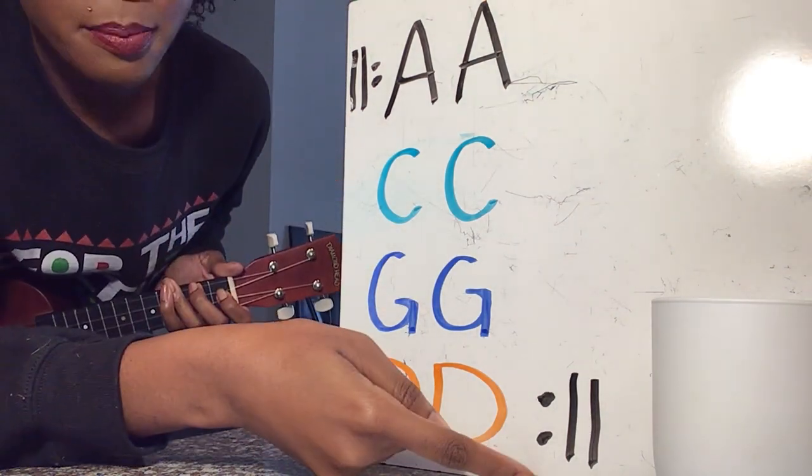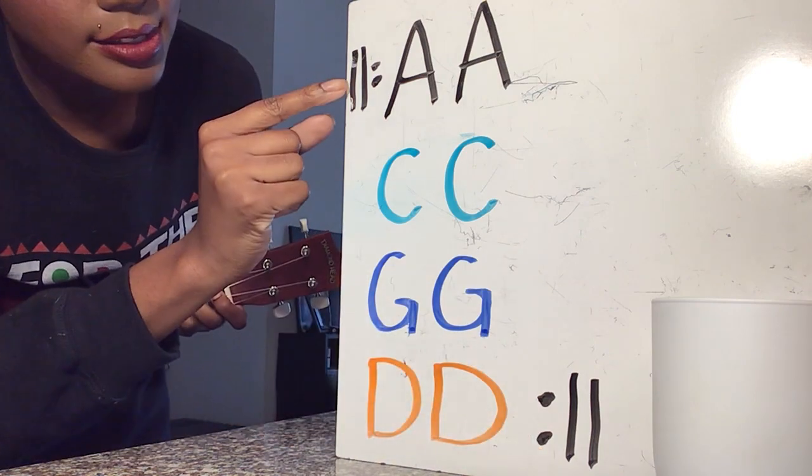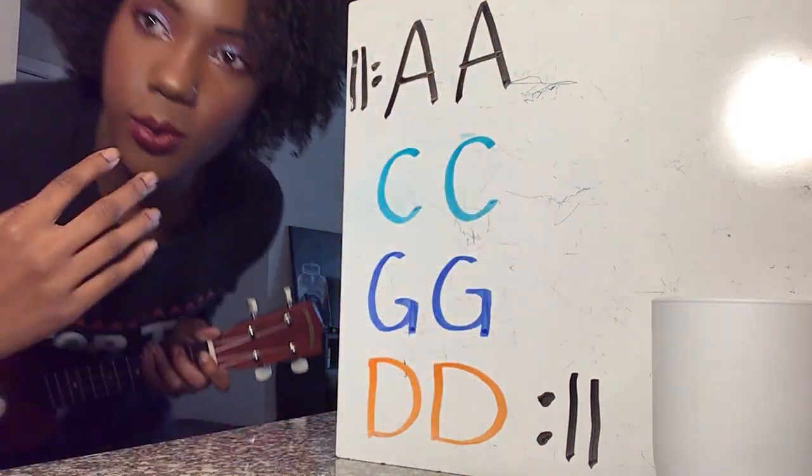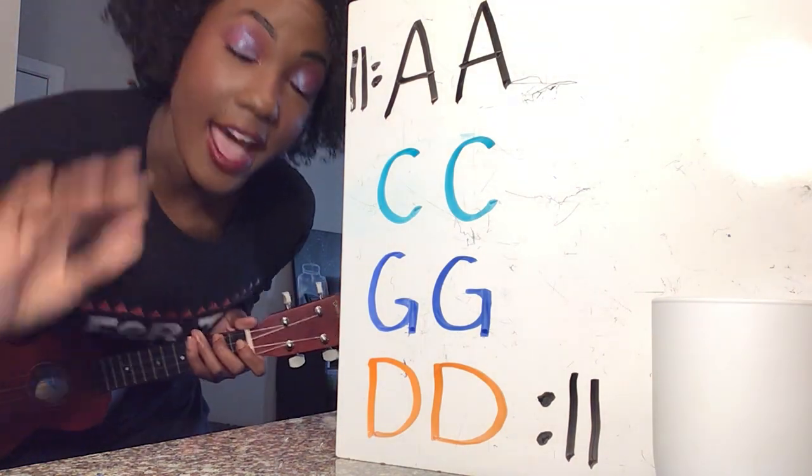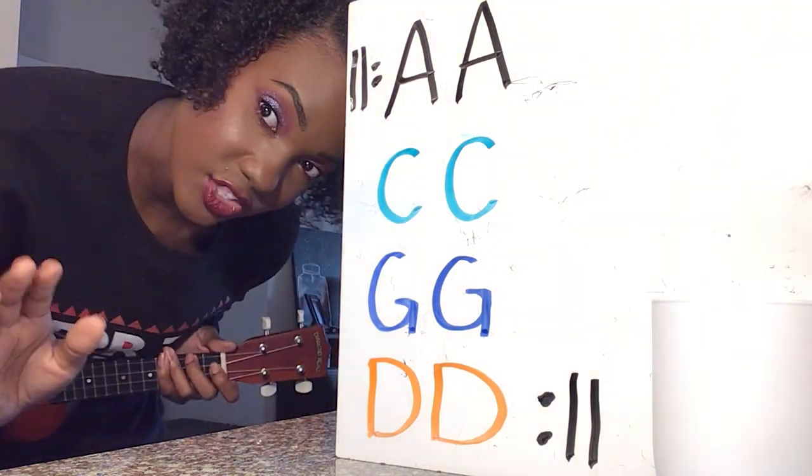This is called a repeat sign, the two lines and the two dots. So that means this whole chord progression, we just repeat it over and over for the entire duration of the song. It does not change.